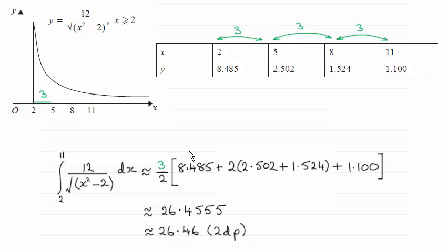You take the first height and then you do plus two times the sum of the middle heights, that's these two here. And then you plus the last height, that's the height of this strip here when x equals 11, 1.100.